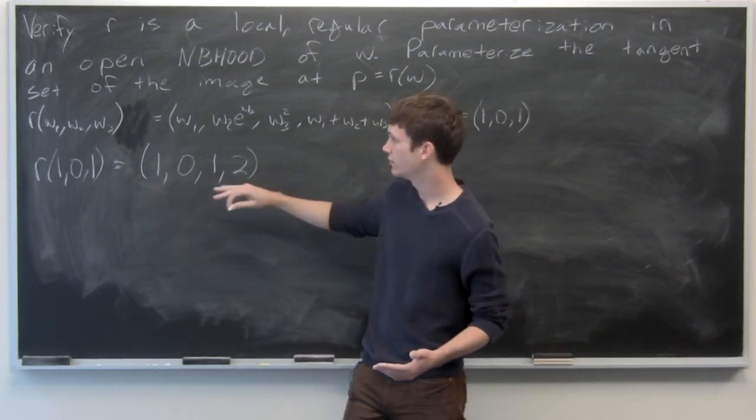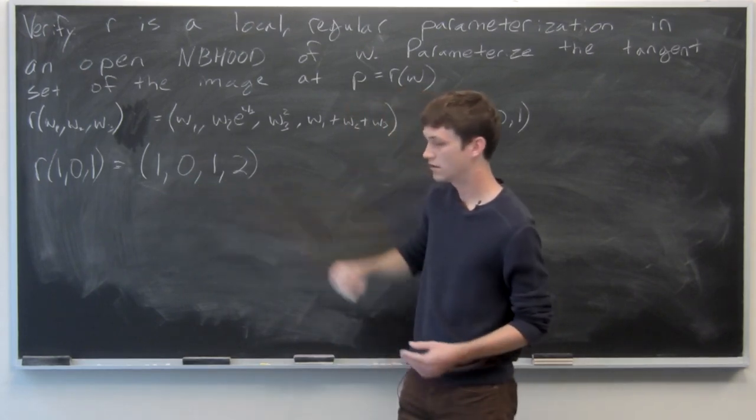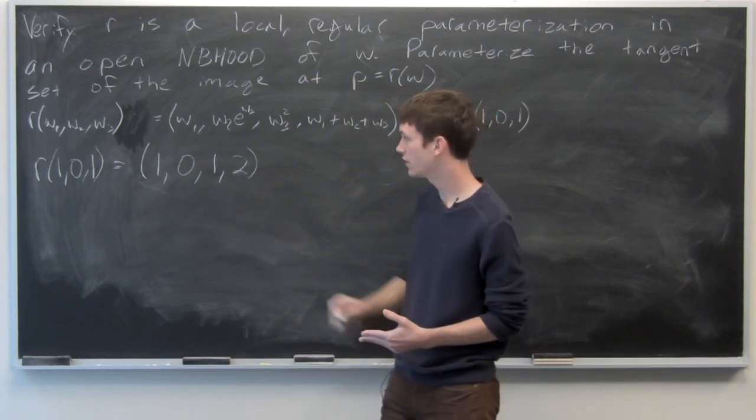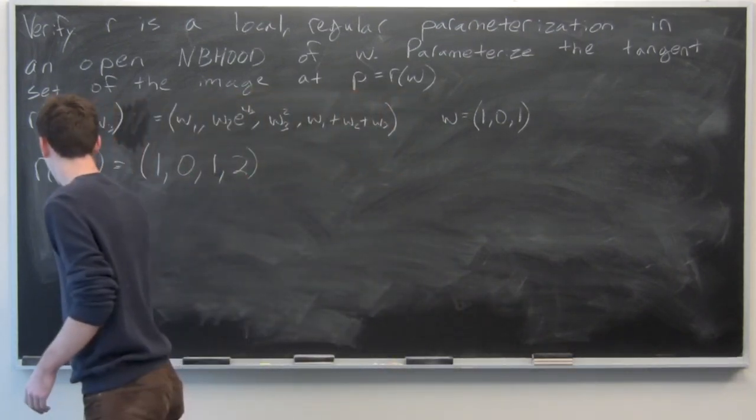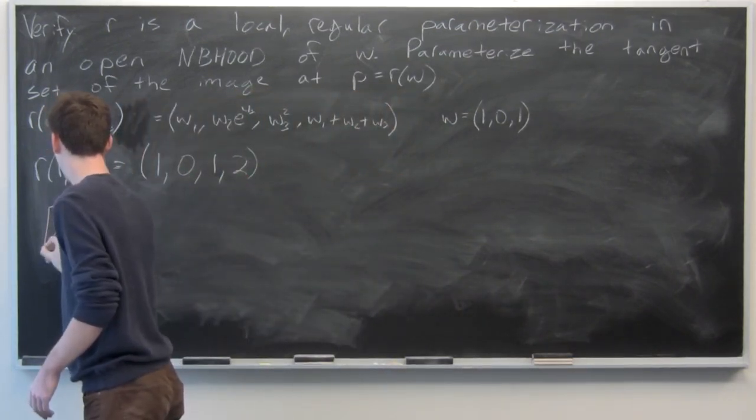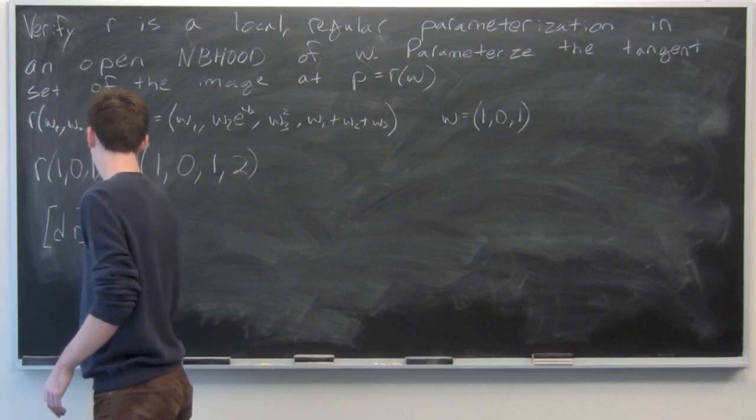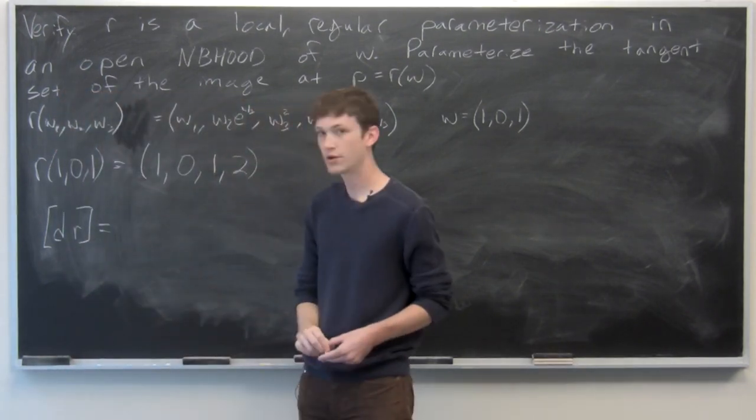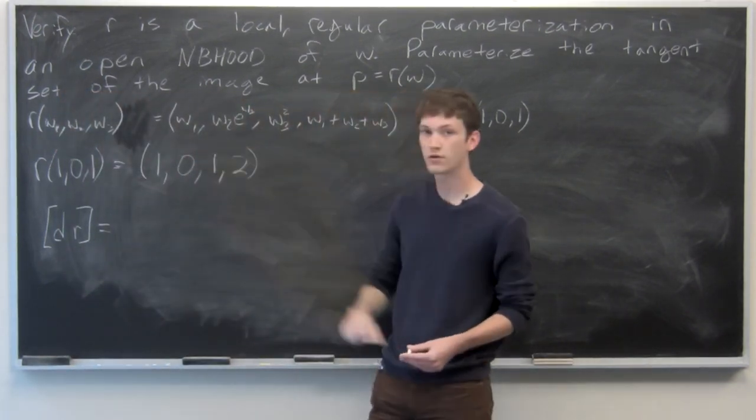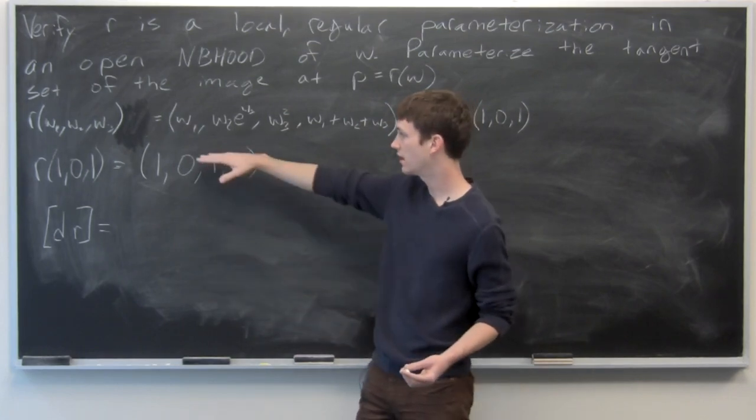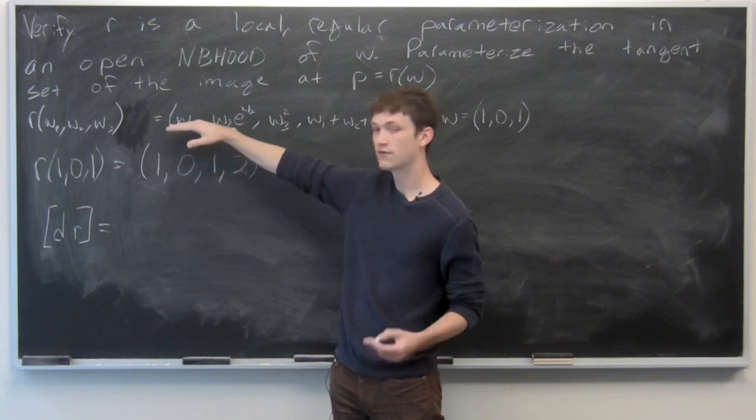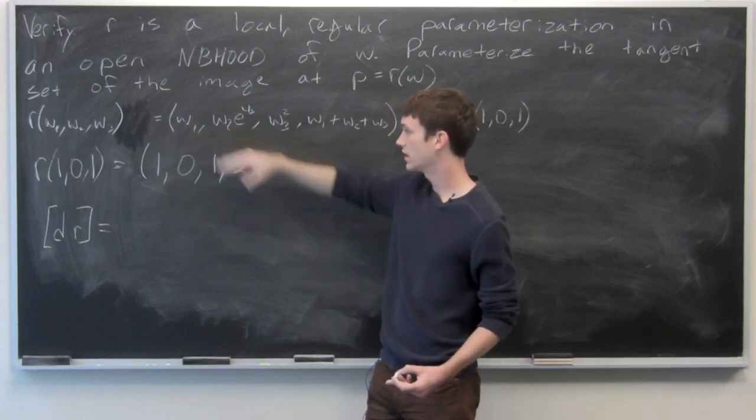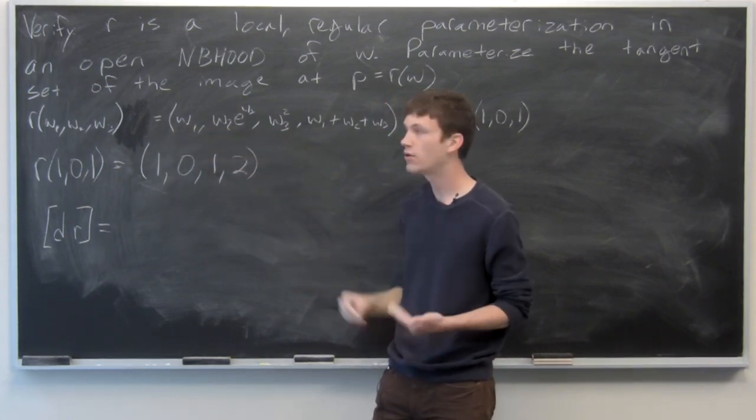And we want to take the Jacobian matrix of our function r. We know that the Jacobian matrix of a multi-component function is defined as the gradient of the first component is the first row, gradient of the second component is the second row, and so on.